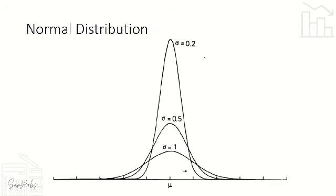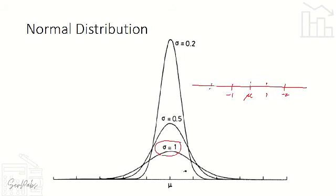Kung ipapakita natin sa graph — eto yung ating mean represented by mu. Sa standard deviation of 1, for every point lumalayo siya ng isang buong puntos: +1, +2, or -1, -2. Sa second standard deviation, lumalayo ng 0.5 lang — kalahati lang. Sa third, lumalayo ng 0.2. So each graph shows how far the values deviate from the mean.